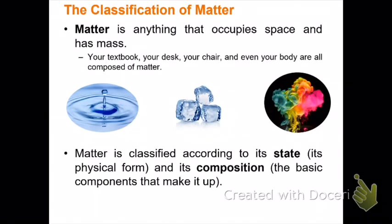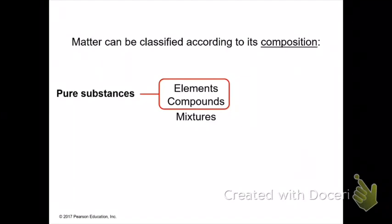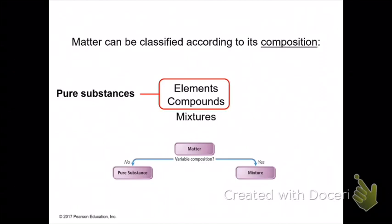Matter is basically anything that occupies space — meaning volume — and has mass. Laptops, cell phones, books, and even your body are all composed of matter. Matter can be classified according to its physical state and its chemical composition. By chemical composition, matter can be composed of elements, compounds, or mixtures. The first two fall under the category called pure substances, which are of course different from mixtures. In essence, matter can be categorized into either a pure substance or a mixture.